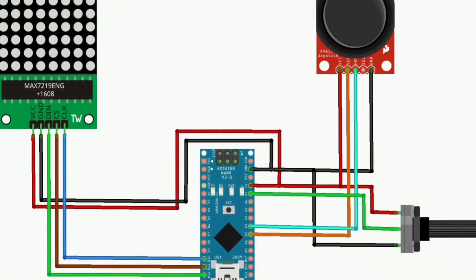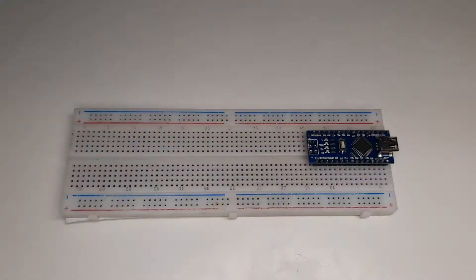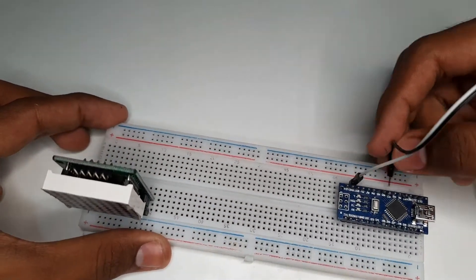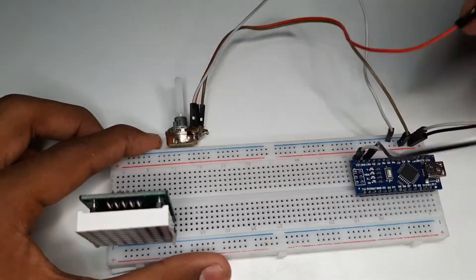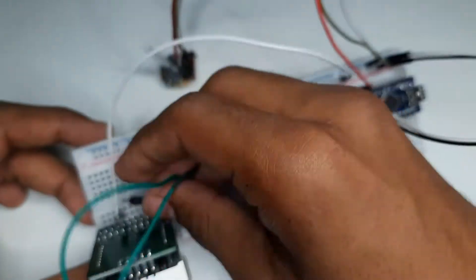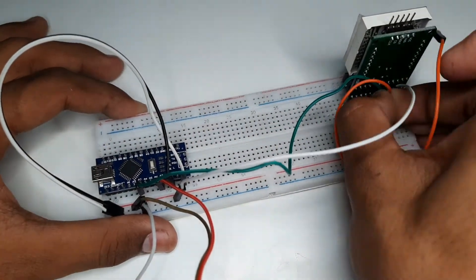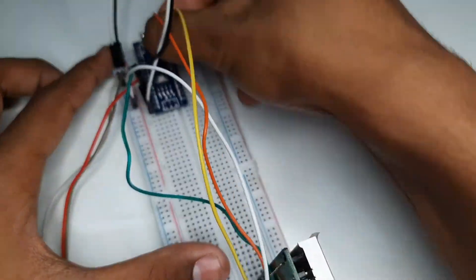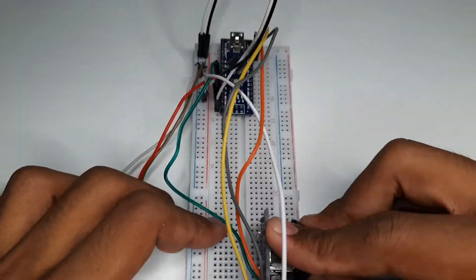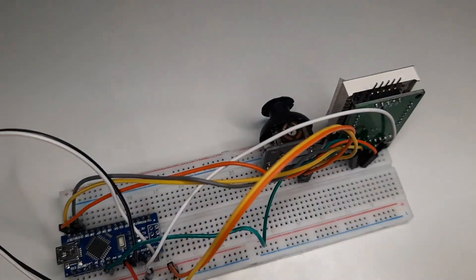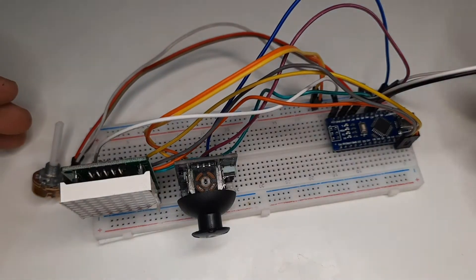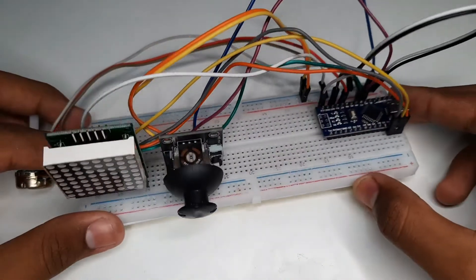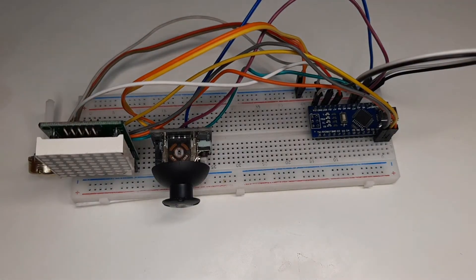Refer to this circuit diagram for the connections. So, finally we are done with the connection part. Let's move to our PC screen for the coding part.